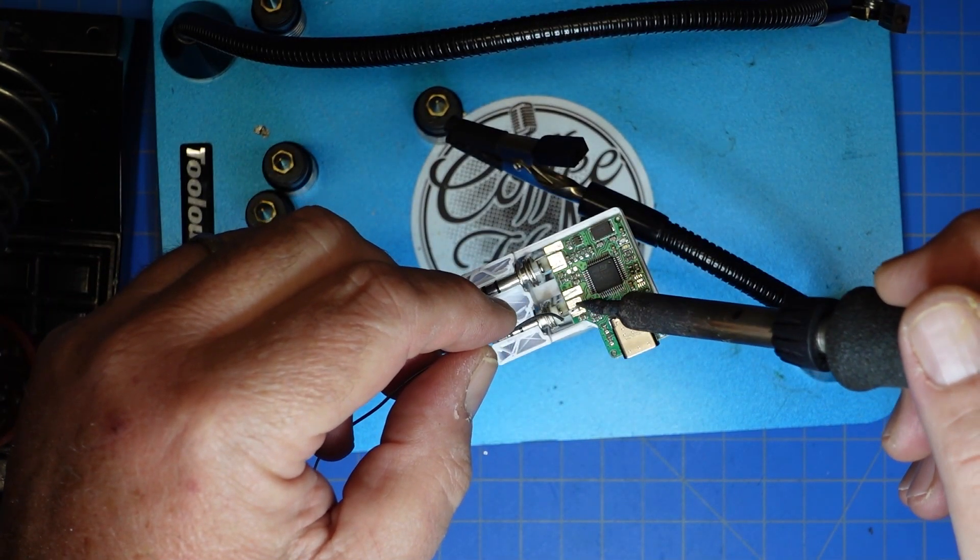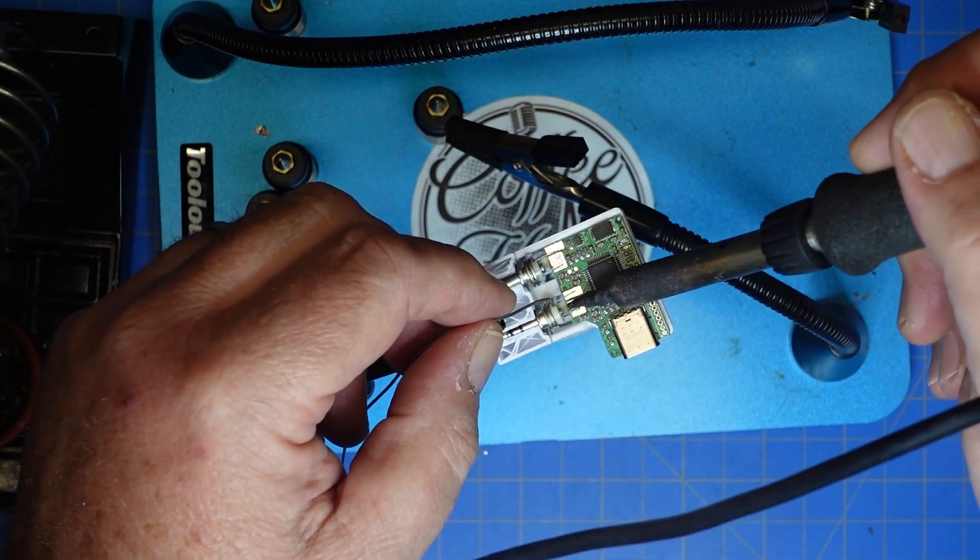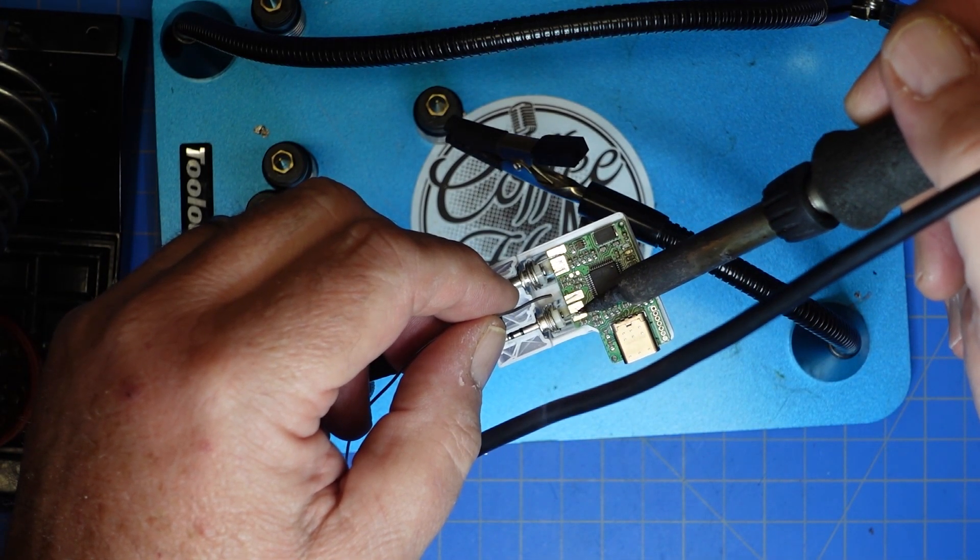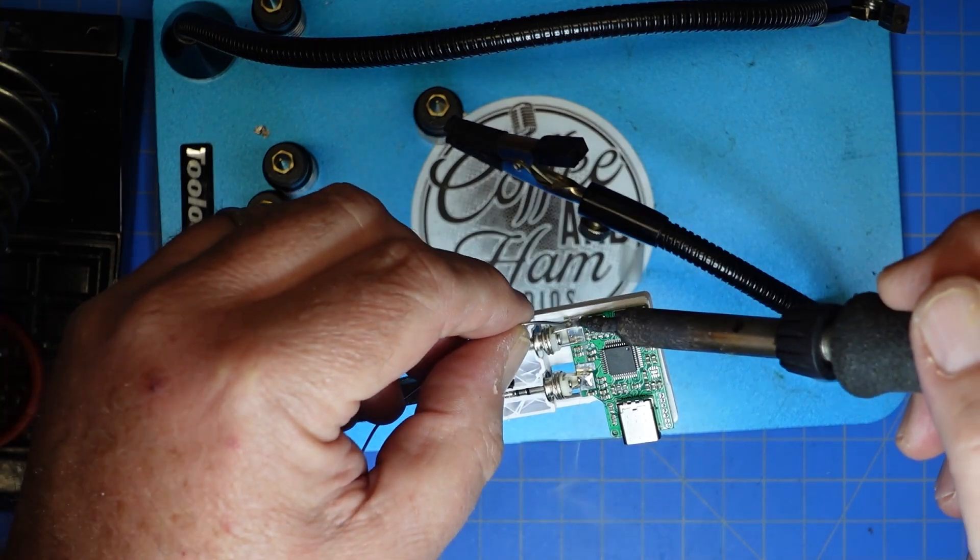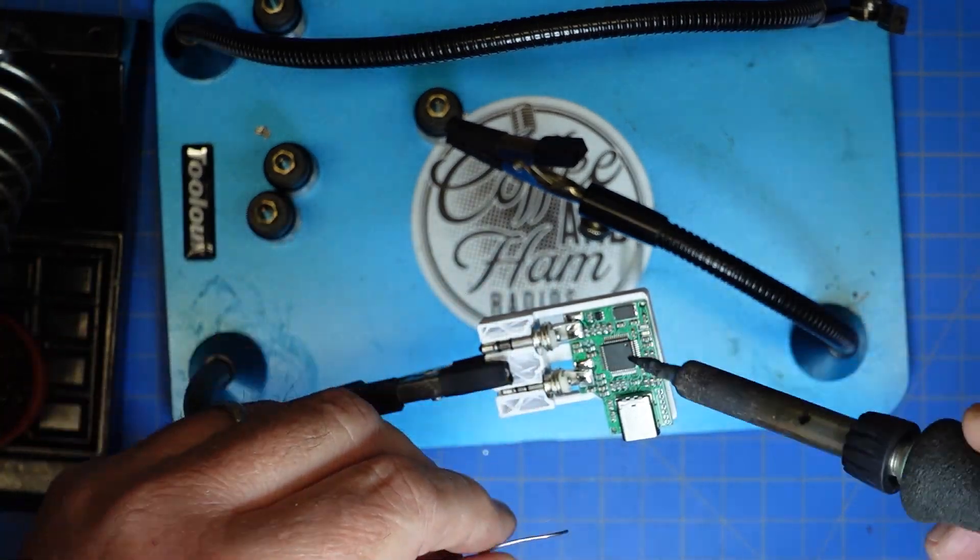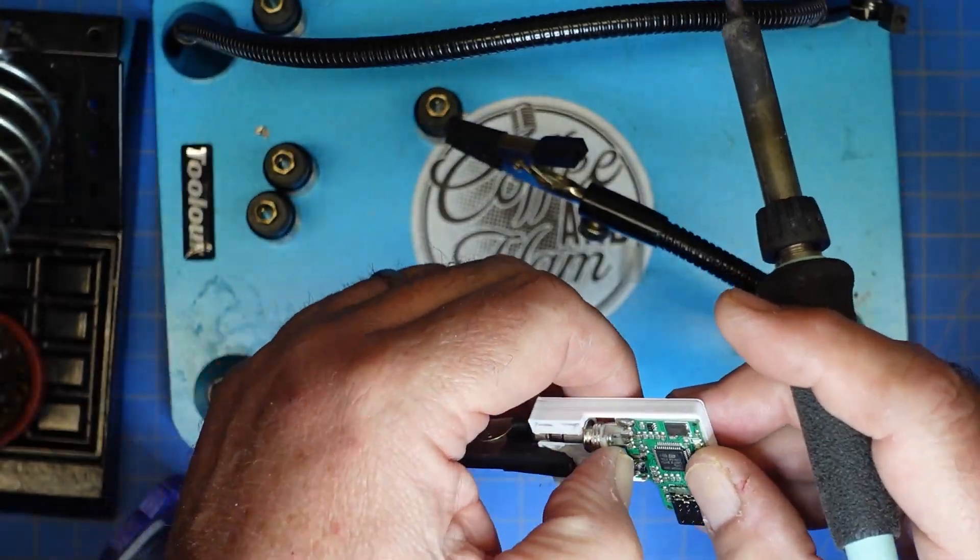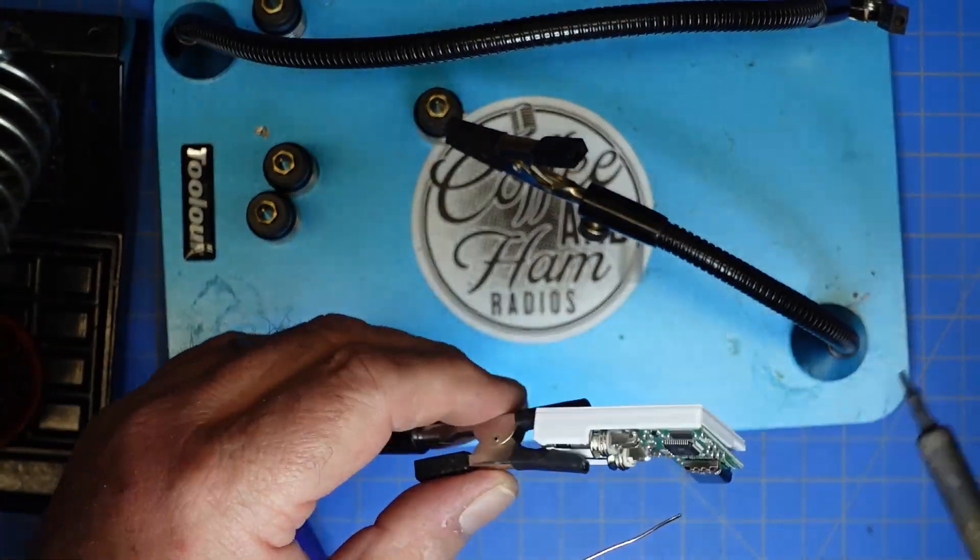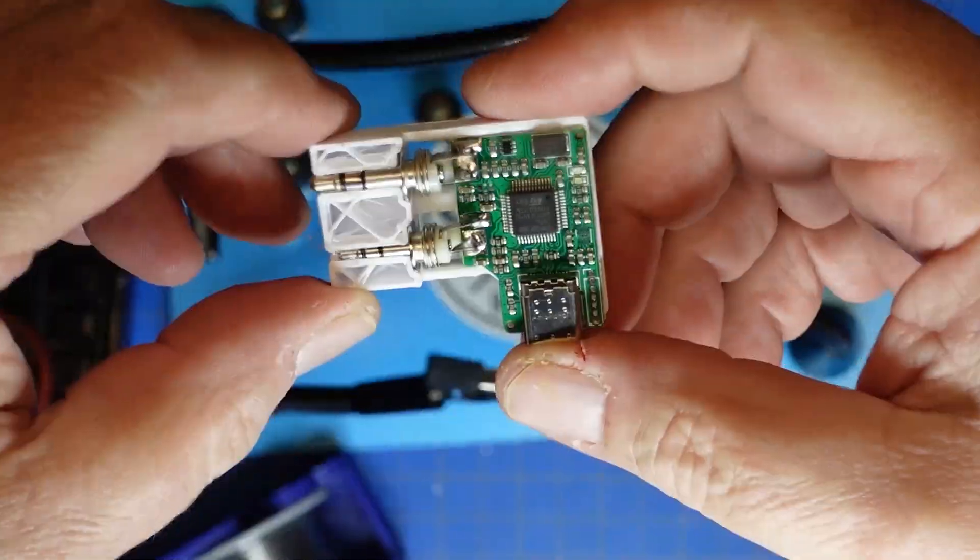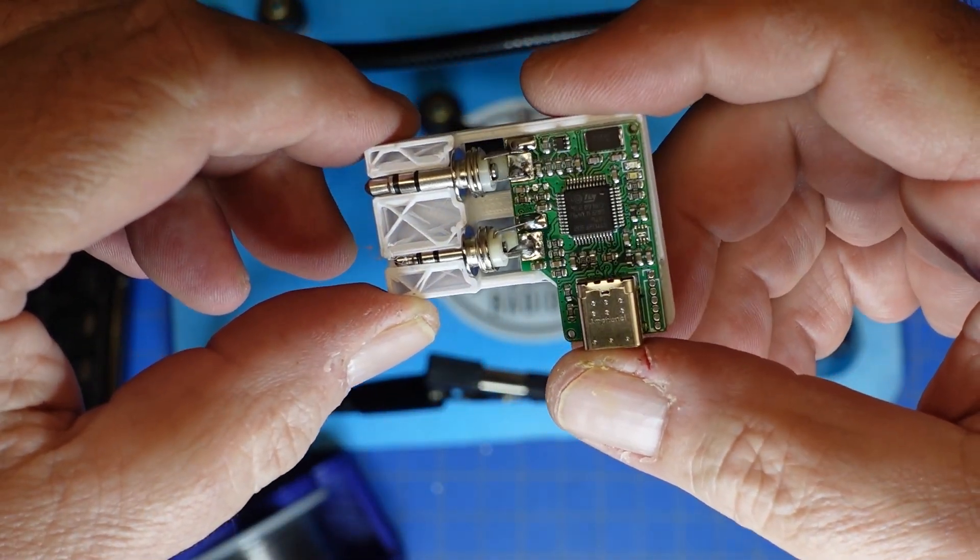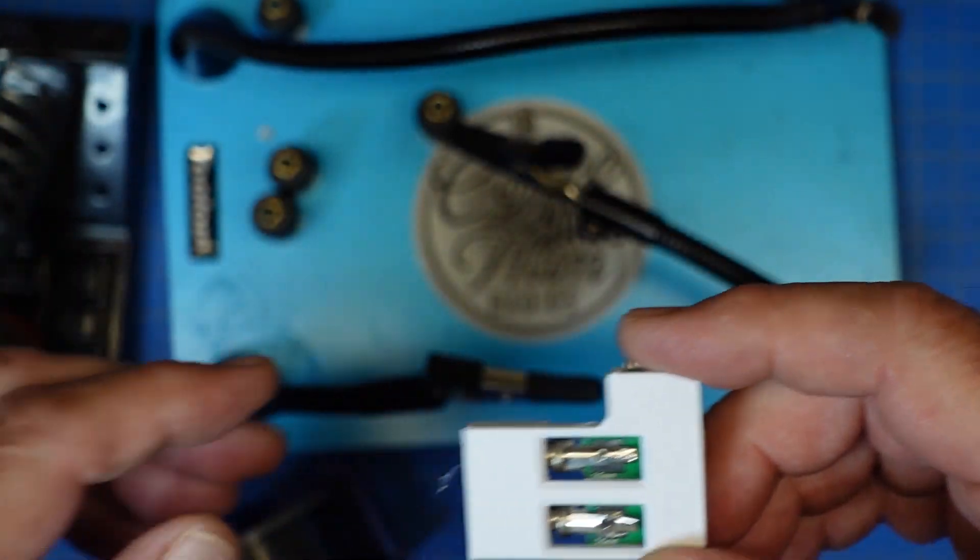Alright so now it's just a matter of heating up our work and dropping a little solder in there. And I'm trying to reach around so you can see this on camera. Okay we've got our front two on and I'm going to make a solder bridge there. So now let's get our ones on the back because those are the easy ones.